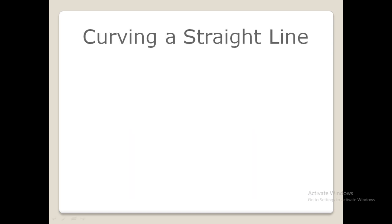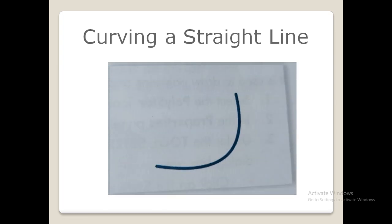Next, we will discuss curving a straight line. To curve a straight line, select the selection tool in the tools panel. Bring the pointer to the center of the line and you will notice a curve symbol appears right below the arrow. Click and drag the pointer to give a curved line, then release the mouse button once the desired curve is made.